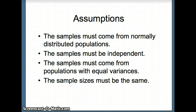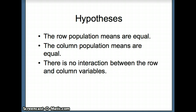Recall, in one-way analysis of variance, we could have sample sizes that were different for the various factors. Now, we have three different hypotheses that we're going to look at. The first one is that the row population means are equal. The second one is that the column population means are equal. And the third is that there is no interaction between the row and column variables.